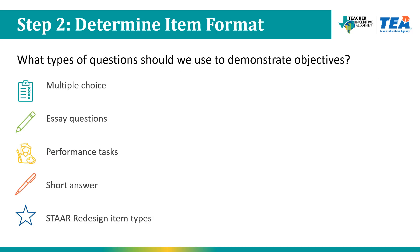Now that Ms. Lawrence has her objectives, she needs to decide how she is going to assess them. She decides that students will be best suited to graph linear equations on graph paper. She will use multiple choice to assess if students can solve and apply systems of equations to inequalities. And she wants them to show their work with a word problem at the end where students show the steps they took. Now that Ms. Lawrence has determined item format, she can move on to constructing an initial pool of items.